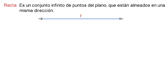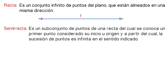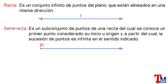En segundo lugar, introduciremos el concepto de semirrecta, que se define como un subconjunto de puntos de una recta del cual se conoce un primer punto considerado su inicio u origen, y a partir del cual la sucesión de puntos es infinita en el sentido indicado. Por ejemplo, se le nombra con una letra mayúscula en el punto de origen y con una flecha en el sentido en el que se extiende indefinidamente.